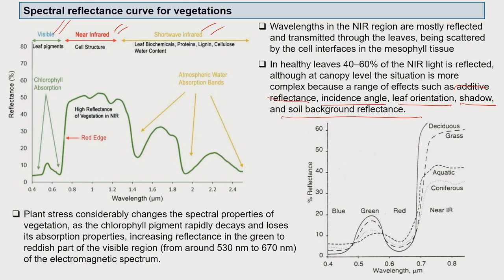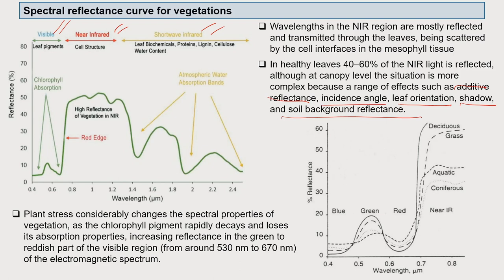Plant stress considerably changes the spectral properties of vegetation. If a plant is running out of water, the chlorophyll pigment rapidly decays and loses its absorption properties, affecting both the chlorophyll and the internal structure of the leaf. If absorption properties are reduced, reflectance will increase. So the reflectance in the green to reddish part of the visible region will get enhanced under stress conditions, as shown by graphs depicting reflectance across blue, green, and red wavelengths for different plant types.